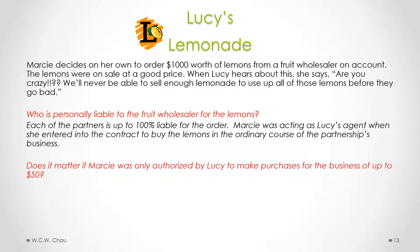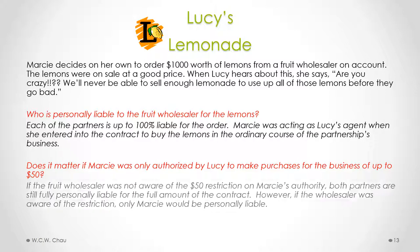Each of the partners is up to 100% liable for this order, so each can be made personally liable for the full $1,000. Marcy was acting as Lucy's agent when she entered into the contract to buy the lemons in the ordinary course of the partnership's business — ordering lemons is part of the ordinary course of the lemonade business. As for the $50 restriction: if the fruit wholesaler was not aware of the $50 restriction on Marcy's authority, both partners are still fully personally liable for the full $1,000. However, if the wholesaler was aware of the restriction, only Marcy would be personally liable.